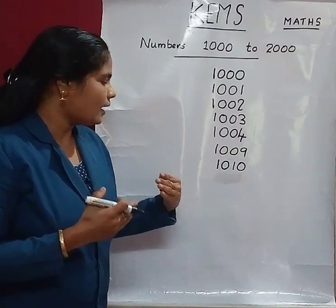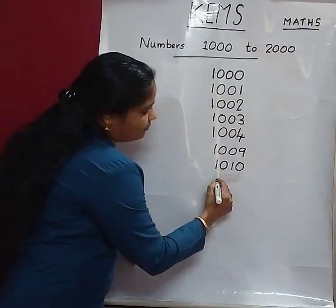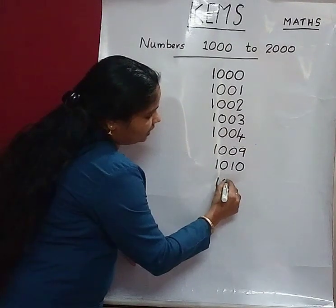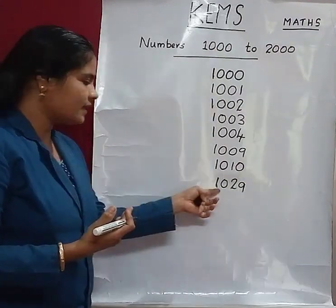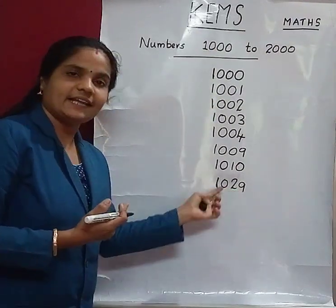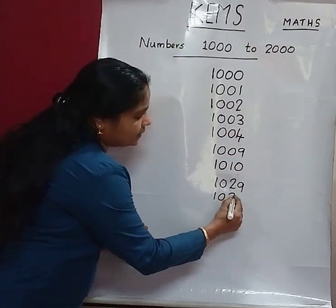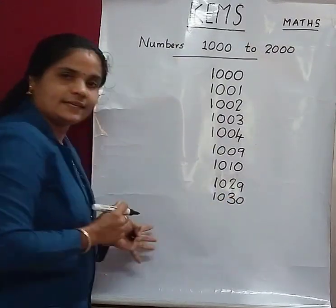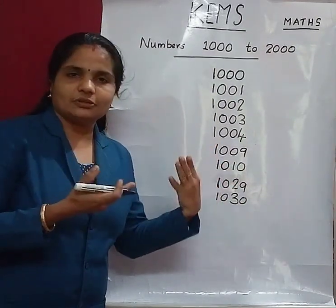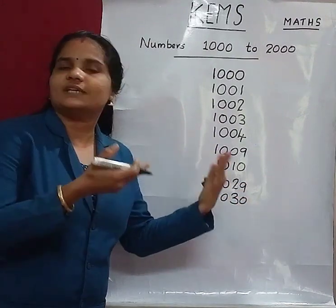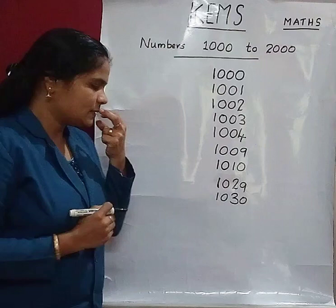Then, after 1029 comes 1030. 1030, 1031, 1032, 1034 — and so on. Children, after 1099 comes which number? After 99 comes 100, so after 1099 comes 1100.